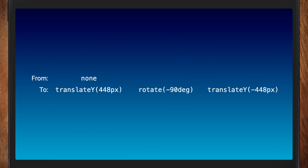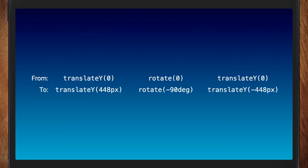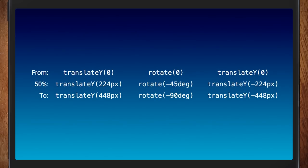This is what the browsers do according to the spec: we've got our from value and our to value. It will pad them out so they are the same length with kind of no-op things. Then it will convert the format so that they're in the same primitive. So in this case it means turning the none into translate Y zero, turning the rotate. We've got our zeros and then it interpolates each of the things independently. So our 50% mark there is that. And when you look at that, it starts to become obvious why it was going wrong.